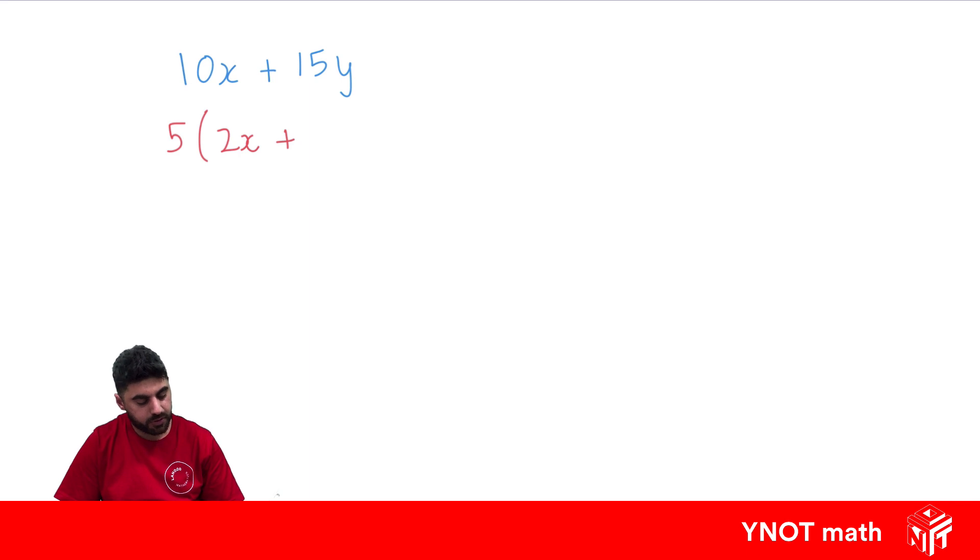Plus, what do we need to multiply by 5 to get us back to 15y? Well, we're going to need 3y, because 5 times 3 is going to get us back to 15. And that has been successfully factorized.